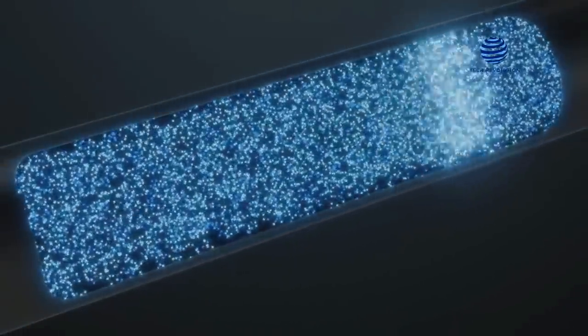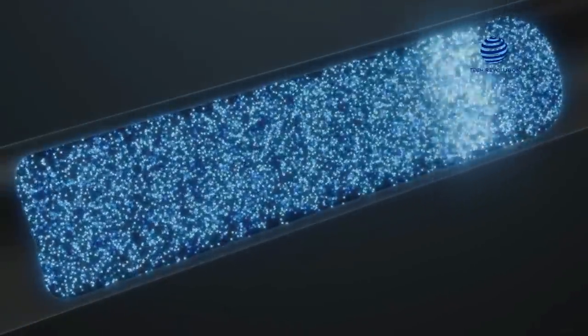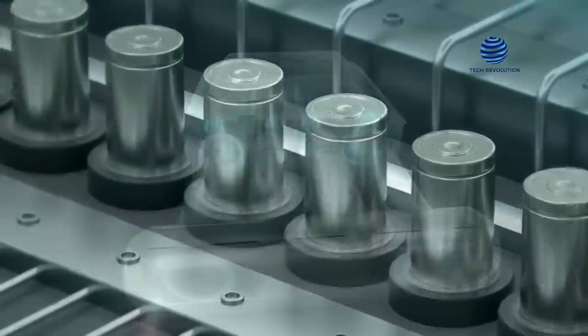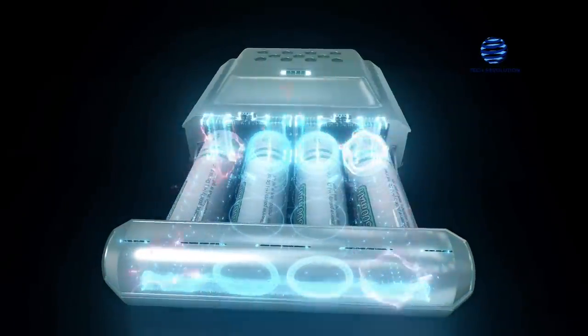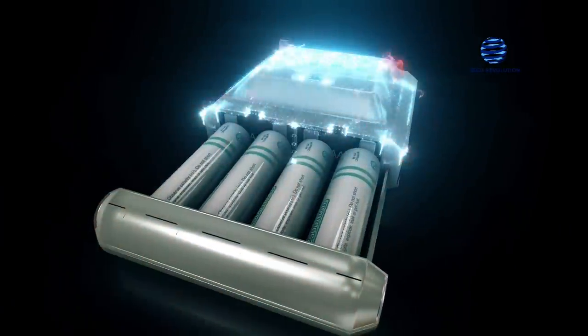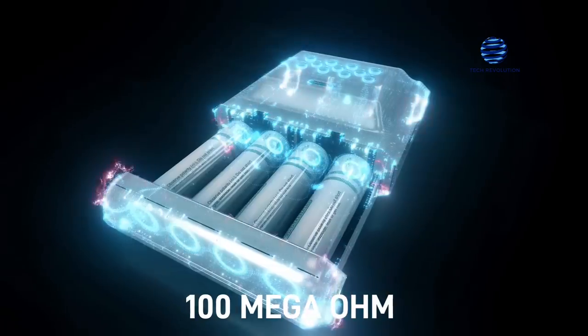FETs control the flow of current in a semiconductor device by generating an electric field. Source, gate, and drain are all possible configurations. The FET effectively isolates control from the flow because of its high resistance from intake to an output of at least 100 megaohms.